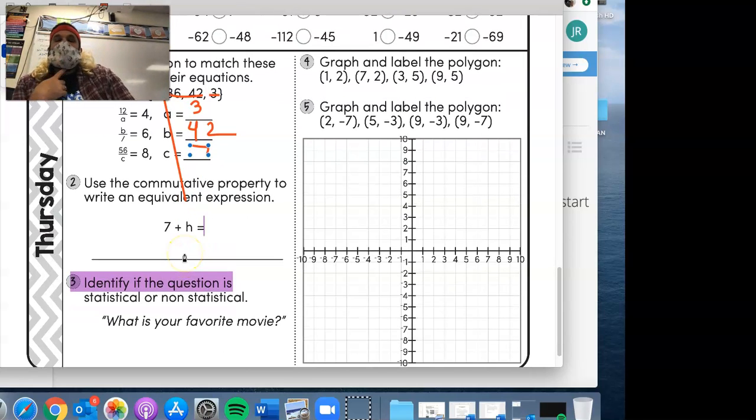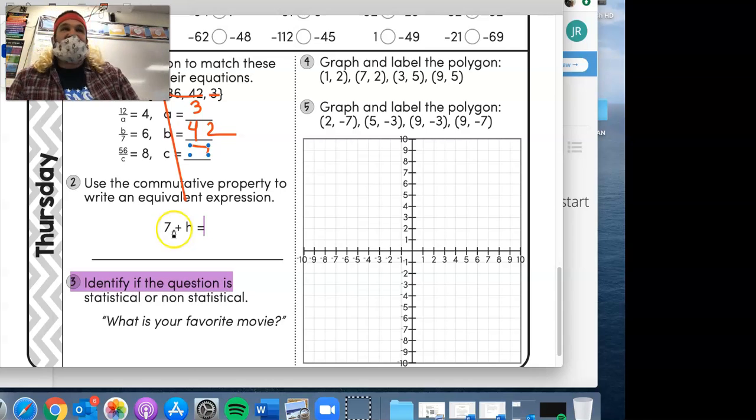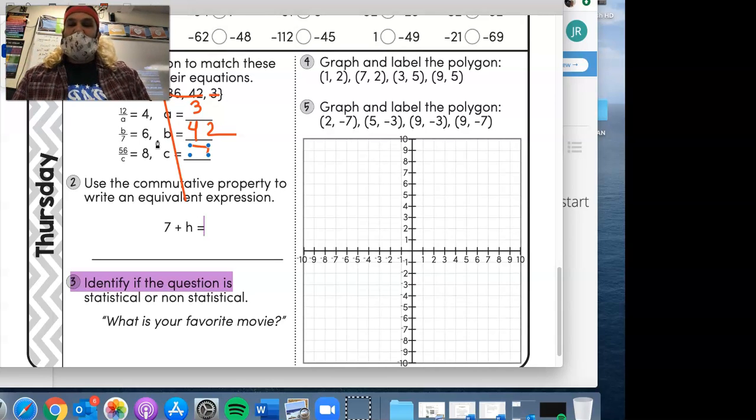We got this. Use a commutative property to... I can't even say that. Who comes up with these words? Commutative. I think that's how we say it. All right. Class. Use a commutative property to write an equivalent expression. Who knows what the commutative is?